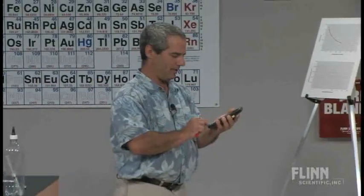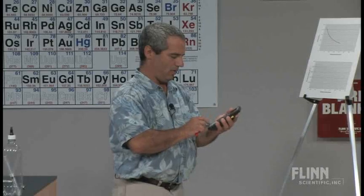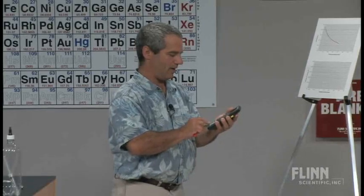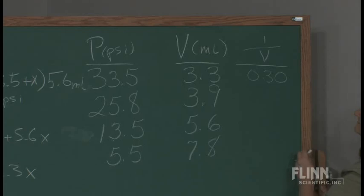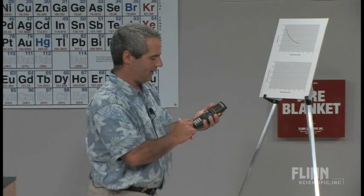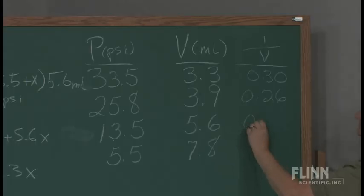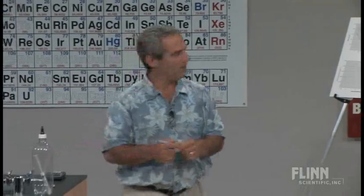We're going to see the inverse of the volumes: the inverse of 3.3, 1 divided by 3.3, is about 0.30. And 1 divided by 3.9 is 0.26. And of course 1 divided by 5.6 is 0.18. And finally 1 divided by 7.8, this will really show us how good each of those data points is, is 0.13.